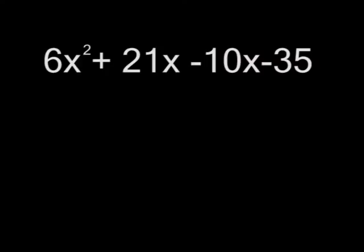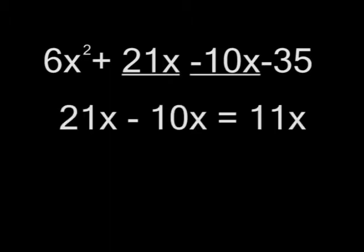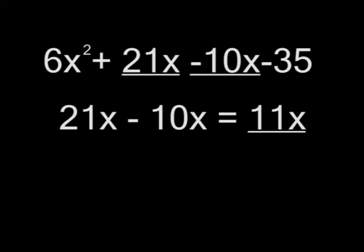All of the groups will be 6x squared plus 21x minus 10x minus 35. Simplify the like terms, 21x and negative 10x. The final answer will be 6x squared plus 11x minus 35.